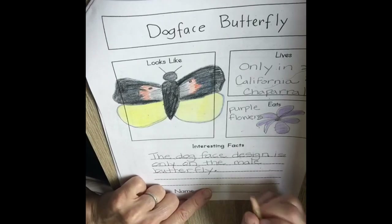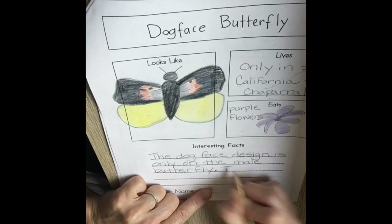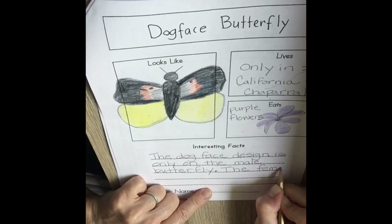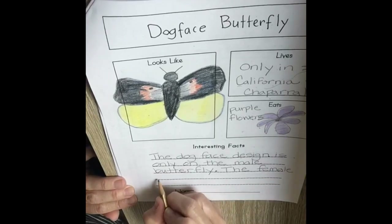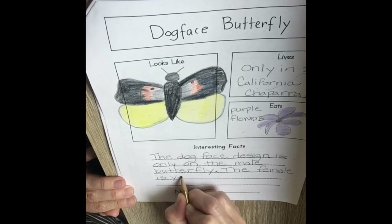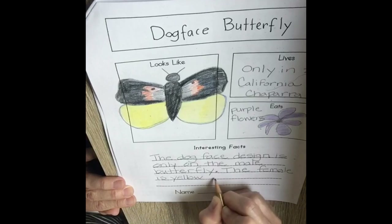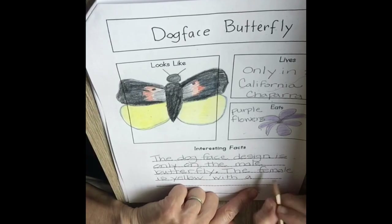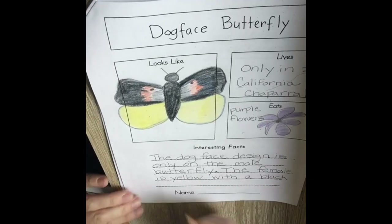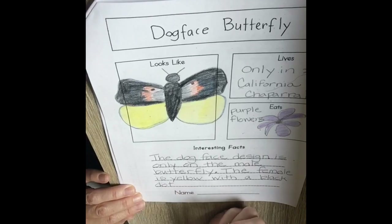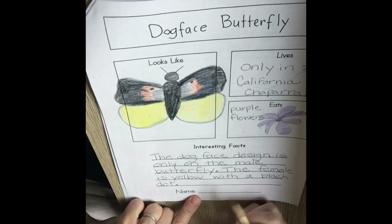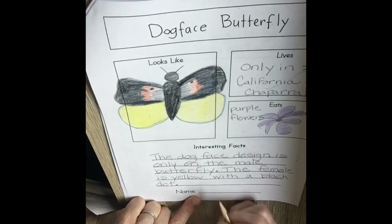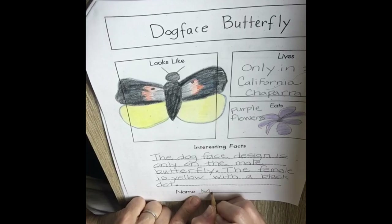I have room so I'm going to write a second sentence. I talked about the male butterfly so I should talk about the female. Be sure to do a capital at the beginning of your sentence. 'The female butterfly is' — what color is it? Yellow — 'with' — what color dot? Black dot. Period. And look, I forgot to put our name! This worksheet wants our name at the bottom, so please go ahead and write your name in your very best writing.